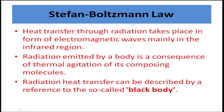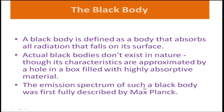The mathematical relationship used for radiation heat transfer is the Stefan–Boltzmann law. Heat transfer through radiation occurs in the form of electromagnetic waves, mainly in the infrared region. Radiation can be described with reference to a black body — defined as a body that absorbs all radiation falling on its surface. It is a perfect absorber. Actual black bodies don't exist in nature, though their characteristics are approximated by a hole in a box filled with a highly absorptive material. The emission spectrum of a black body was first fully described by Max Planck.